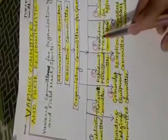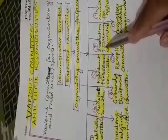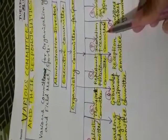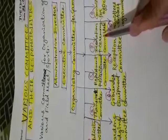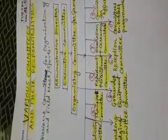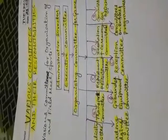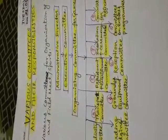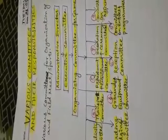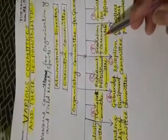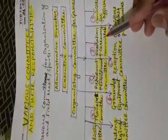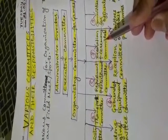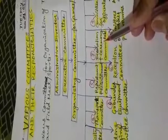Next comes the decoration and ceremony committee. This committee's members are responsible for the decoration of the sports arena or stadium. It is also responsible for making necessary arrangements for the opening ceremony, victory ceremony, and closing ceremony of the games and sports meet.